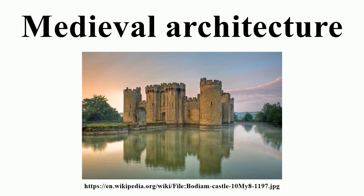It consists of a nave and transepts, and the altar stands at the east end. Cathedrals influenced or commissioned by Justinian employed the Byzantine style of domes and a Greek cross, with the altar located in the sanctuary on the east side of the church.